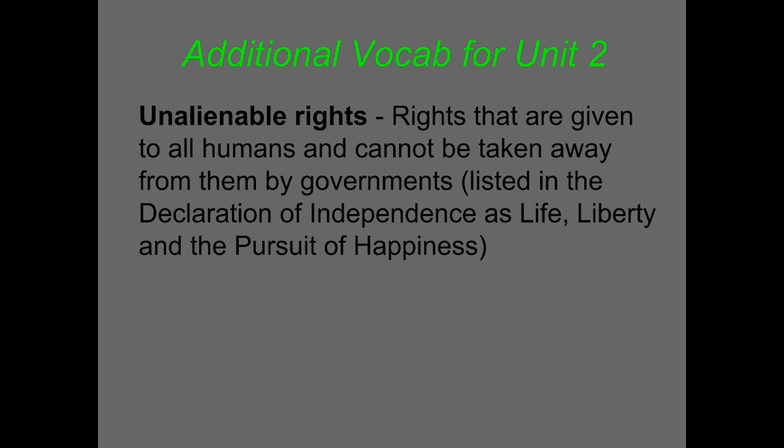And finally, 'unalienable rights,' also called natural rights — these are the rights given to all humans that cannot be taken away by governments. In the Declaration of Independence they're listed as life, liberty, and the pursuit of happiness. In John Locke's writings they're listed as life, liberty, and property. So you can have different takes on those natural rights.